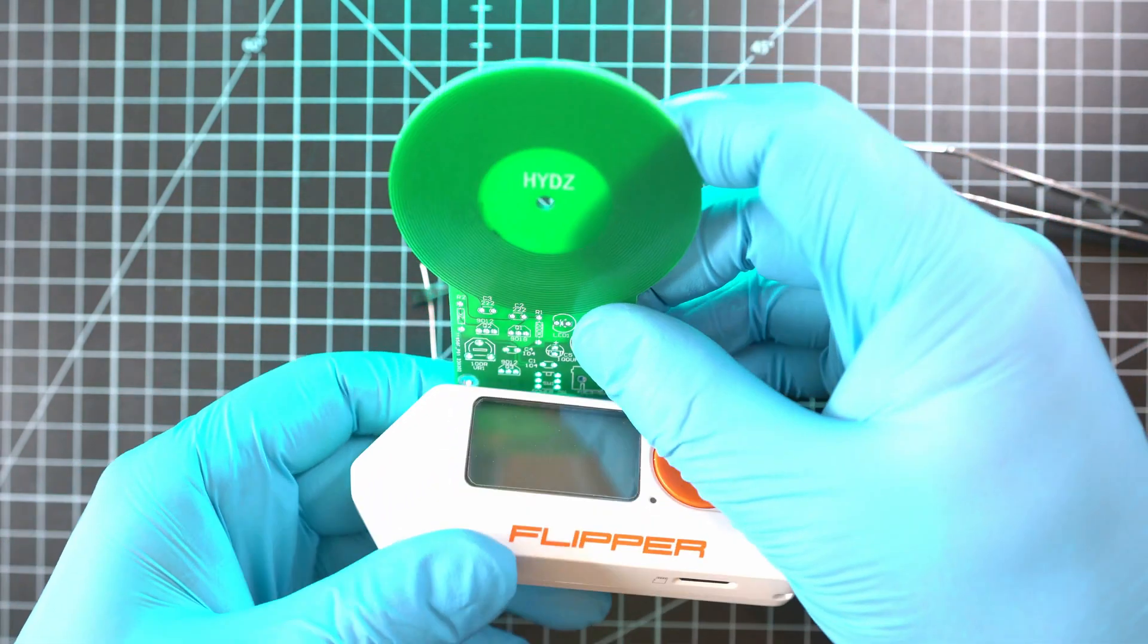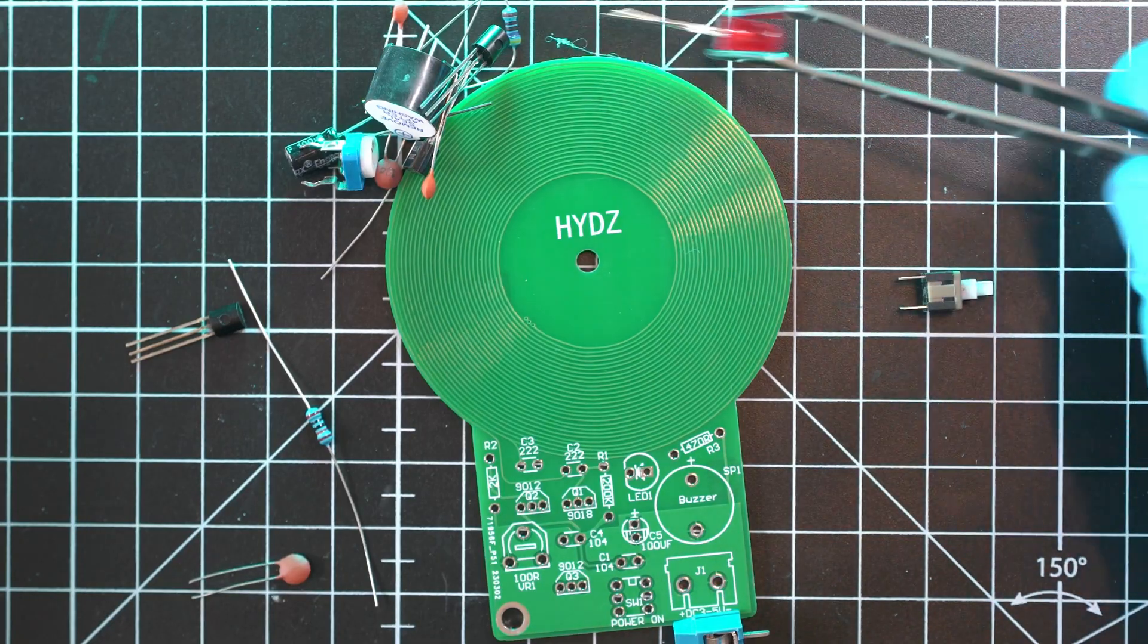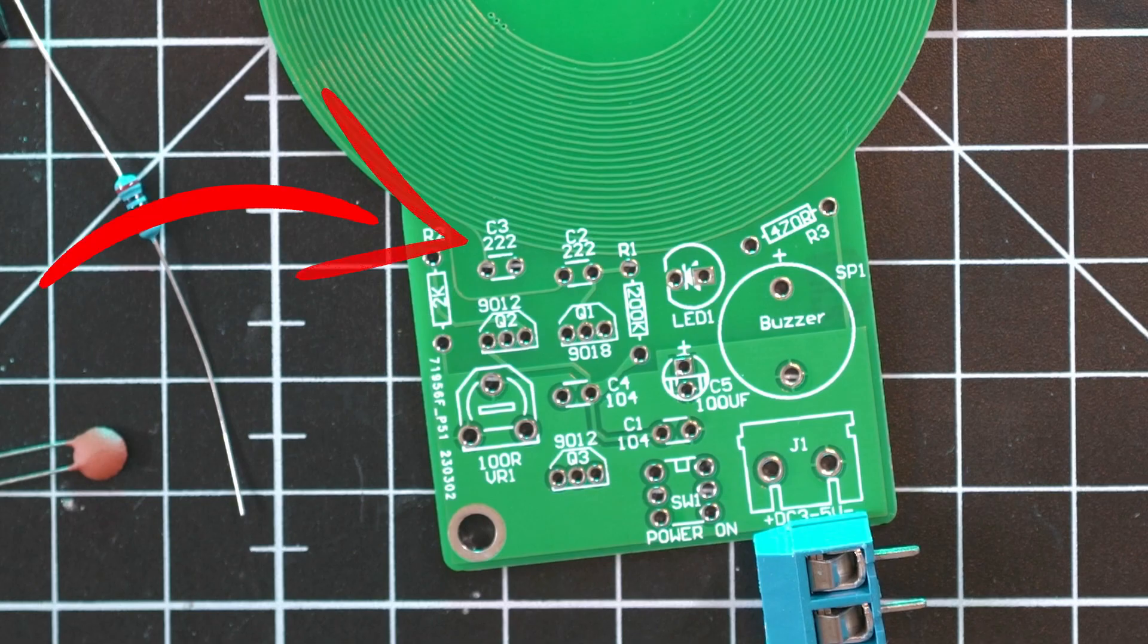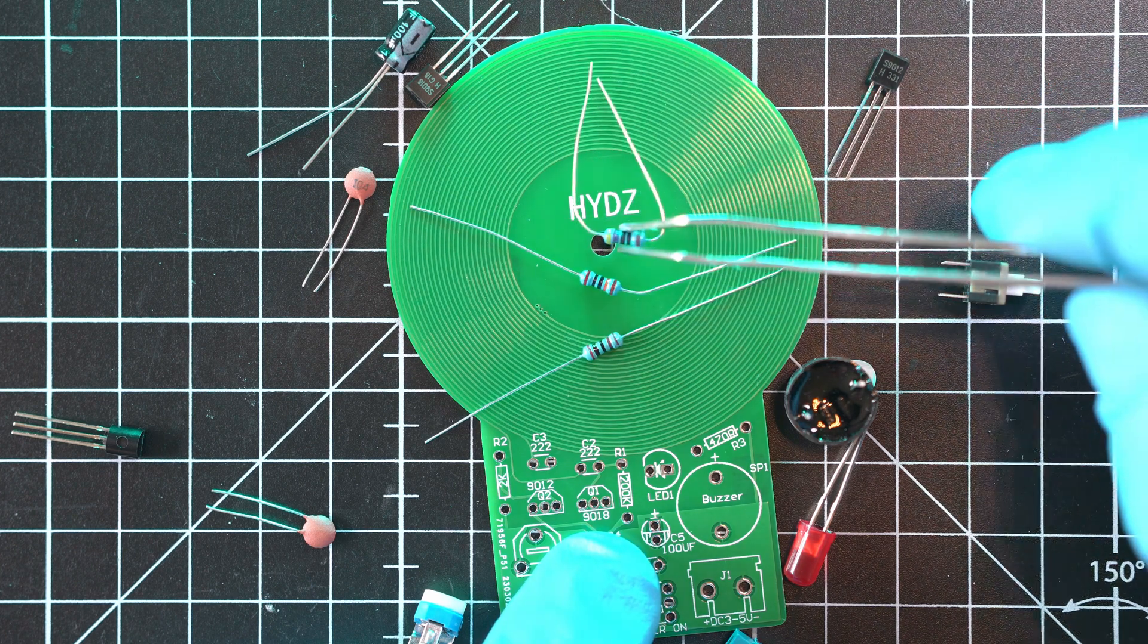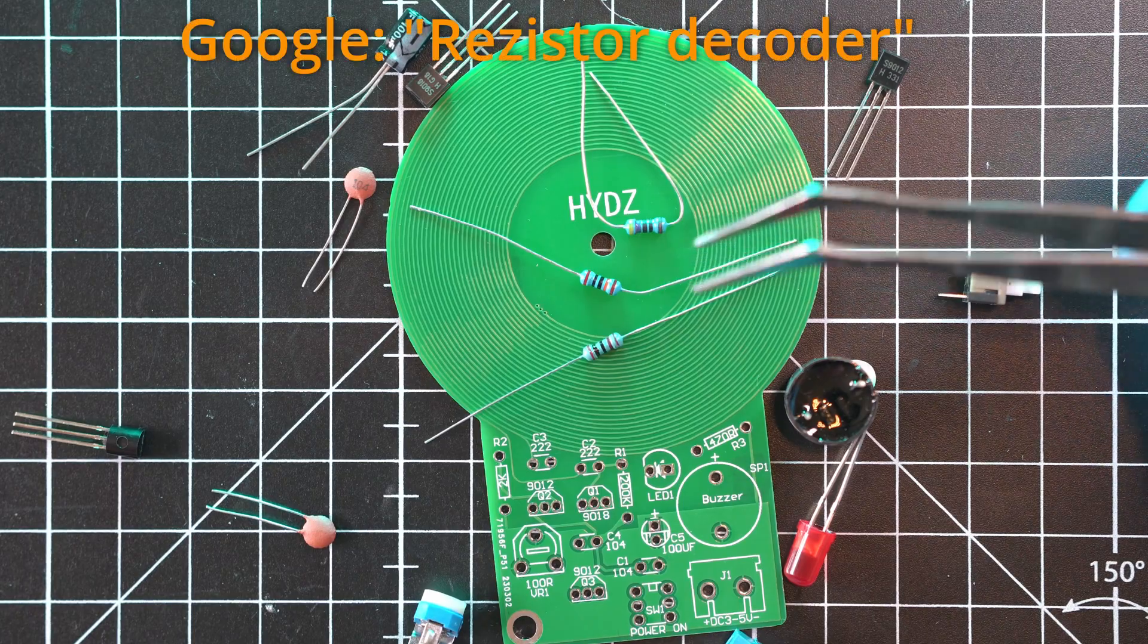So let me build this module first. Almost all components are straightforward, easy to find the place. They have numbers or letters on them and same markings are on PCB, but these resistors are color coded and on PCB is written value so I have to decode it first.